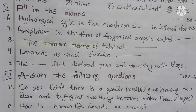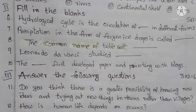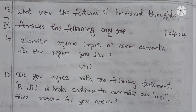Roman numeral three — answer the following questions. Each question carries two marks, total six marks. Eleventh question: do you think there is a greater possibility of knowing new ideas and trying out new things in towns rather than villages? Twelfth question: how is human life dependent on oceans? Thirteenth question: what were the features of humanist thoughts?